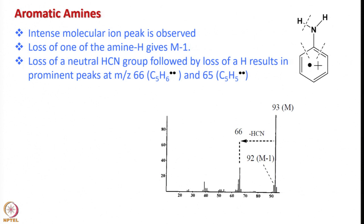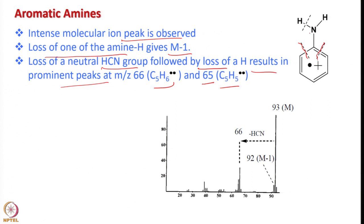Now let us look into aromatic amines. An intense molecular ion peak is observed. Loss of one amine hydrogen leads to m−1 peaks. Loss of a neutral HCN group followed by loss of H results in a prominent peak at m/z 66 (C5H6 radical) or 65 (C5H5 radical). In the typical aniline spectrum, the molecular weight is 93; it loses 1 to give 92, and then HCN is lost to give 66.